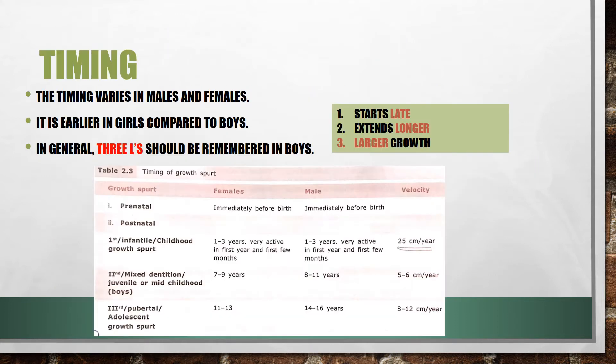Now, what are the timings? The timing varies in males and females — it is earlier in girls compared to boys. Three L's should be considered in boys: growth spurts start Late, they last Longer in duration, and because of that they produce a Larger growth in males compared to females.